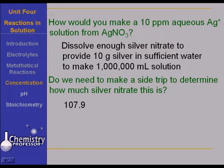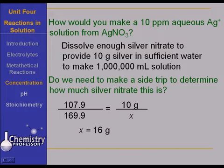Well, we have 107.9 is the atomic weight of silver over 169.9, which is the molecular weight of silver nitrate, is to 10 grams of silver, if you will, over X. In other words, a ratio and proportion. We take the atomic weight of silver to the molecular weight of silver nitrate as 10 grams of silver is to X. And X comes out to be about a little bit less than 16 grams of silver nitrate. So to make a silver nitrate solution have sufficient silver to provide 10 grams of silver in 1,000 milliliters of solution, we would need to dissolve 16 grams of silver nitrate.